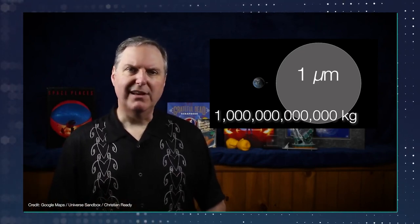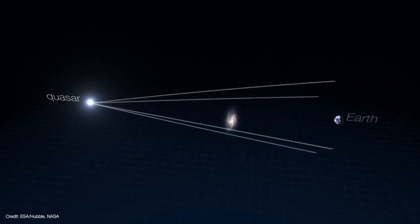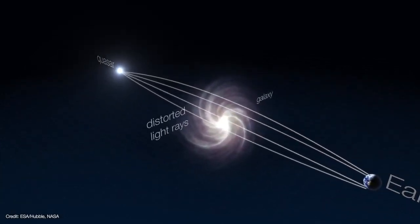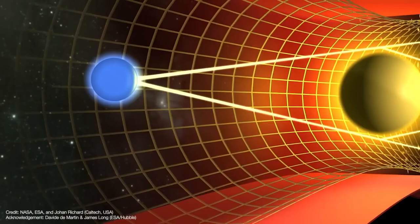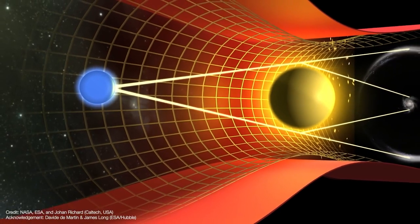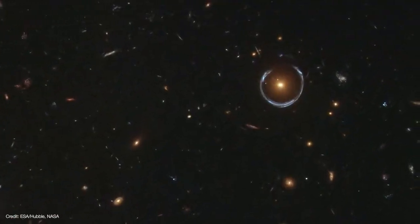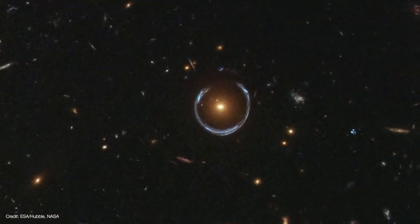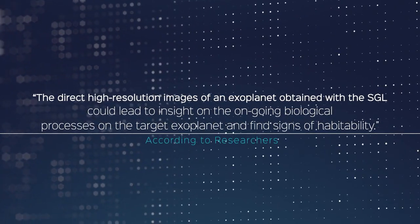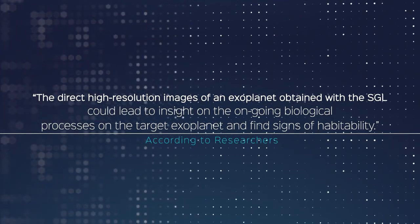With its unique optical properties, the SGL can be used to obtain detailed, high-resolution images of Earth-like exoplanets as far as 100 light-years from Earth, with measurement durations lasting months, or at most a few years. Of particular interest is the possibility of using the SGL to obtain images of high spatial and spectral resolution of a yet-to-be-identified, potentially life-bearing exoplanet in another solar system in our galactic neighborhood. According to researchers, the direct high-resolution images of an exoplanet obtained with the SGL could lead to insight on the ongoing biological processes on the target exoplanet and find signs of habitability.